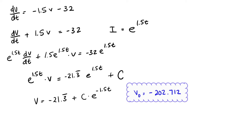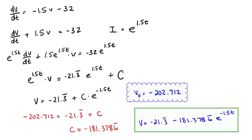We know the initial velocity once we open the parachute was negative 202.712 feet per second. Plugging that in with t equals 0, e to the 0 is 1, we solve for the constant of integration C. This gives us our velocity equation after opening the parachute. We can integrate this one more time to get our position equation that shows the parachuter's position with respect to time. Let's turn the page and integrate.